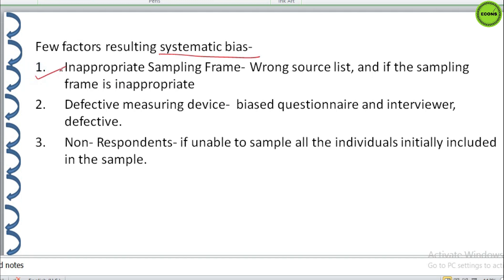The first point is inappropriate sampling frame. In the last video we have discussed what is source list and the inappropriate sampling frame is the result of selecting wrong source list. If the sampling frame is inappropriate, that is a biased representation of the universe, it will result in a systematic bias.